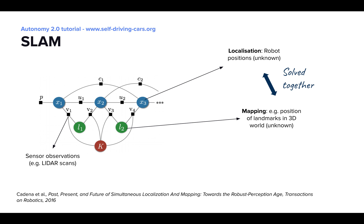The formulation of SLAM is agnostic to the sensors used by the robot, but when we build geometric maps for AVs, we typically use HD LiDAR, which allows SLAM to produce very accurate maps. We can also rely on additional sensors; for example, we can use INS and wheel odometry output as additional constraints.